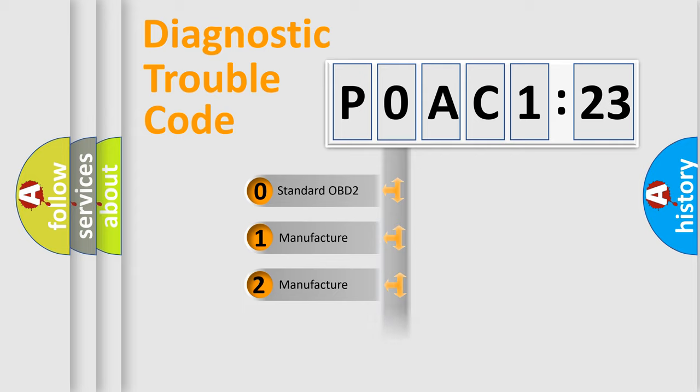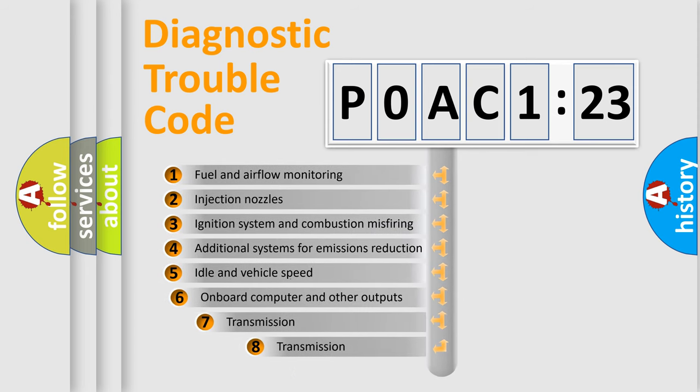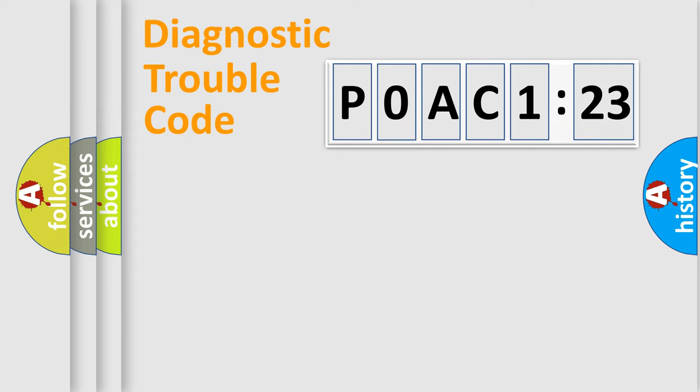Only the last two characters define the specific fault of the group. The add-on to the error code serves to specify the status in more detail, for example, a short to the ground. Let's not forget that such a division is valid only if the other character code is expressed by the number zero.